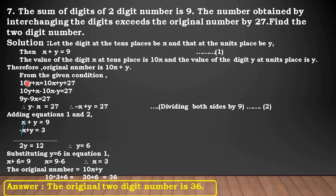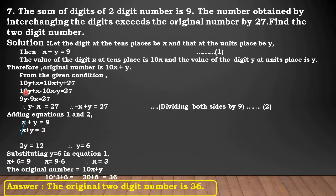Therefore, the original number is 10X plus Y. From the given condition, 10Y plus X is equal to 10X plus Y plus 27. When we interchange the digits, we get 10Y plus X. It exceeds the original number by 27. By simplifying, 10Y plus X minus 10X minus Y is equal to 27, giving us 9Y minus 9X is equal to 27. Dividing both sides by 9, we get Y minus X is equal to 3. Number this equation as 2.